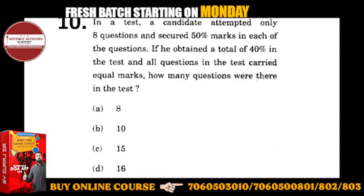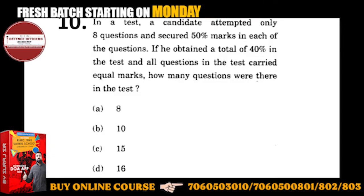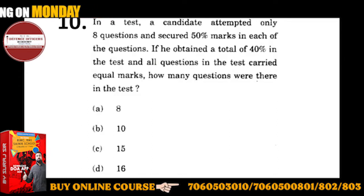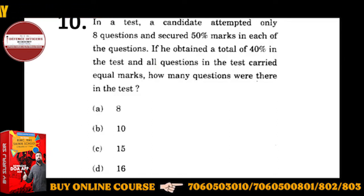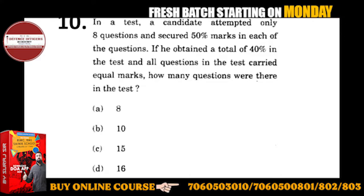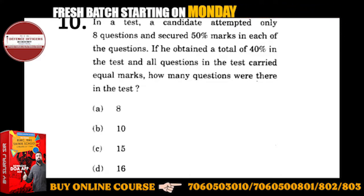In a test, a candidate attempted only eight questions and scored 50% marks in each of the questions. If he obtained a total of 40% in the test and all questions carried equal marks, how many marks were there in the test? Very simple.